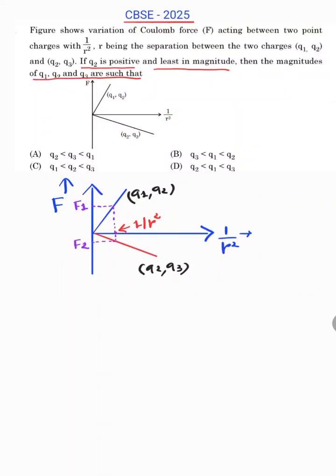In CBSE 2025 MCQ, figure shows variation of Coulomb force F acting between two point charges with 1 upon R square, R being the separation between two charges Q1, Q2 and Q2, Q3. If Q2 is positive and least in magnitude, then the magnitudes of Q1, Q2 and Q3 are such that.